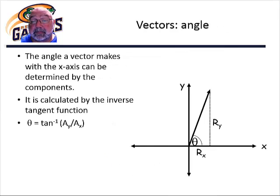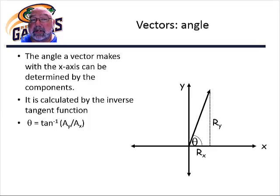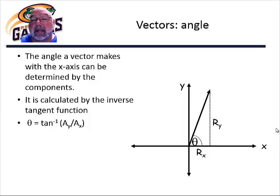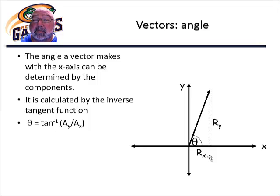Now the angle. If we want to find the angle and we know our components — we know the y component and we know our x component — the y component is opposite the angle and the x component is adjacent to the angle. Tangent says that the tangent of the angle is the y component divided by the x component. To find the actual angle, we need to do the inverse function: the inverse tangent of the y component divided by the x component gives us our angle.